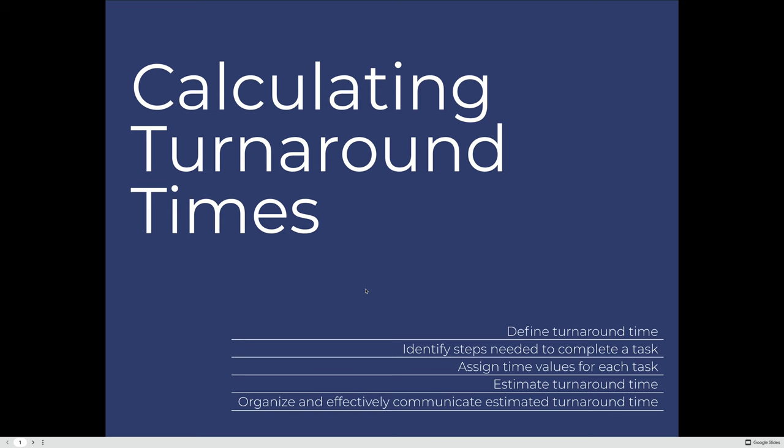To do that, we will define what turnaround time is. We will practice identifying steps that are needed to complete a task — that task can be anything relating to any industry, but we'll apply it to the commercial graphic arts industry. We'll then take those tasks and estimate or assign time values for each item, and use those times to calculate how long it will take to produce whatever we're producing.